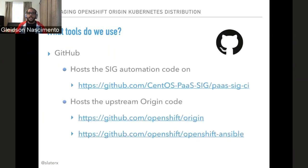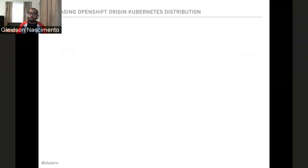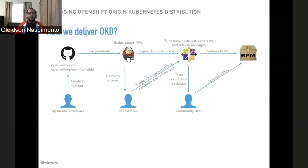We also rely on GitHub, which is where the SIG automation code is, but it's also where the origin code is, and it's also where the OpenShift Ansible installer is hosted — you can connect there to see where we are today. We also use Jenkins for watching origin and OpenShift tags and for running Ansible against pre-grade tags or following a particular schedule, depending on the target that we are following.